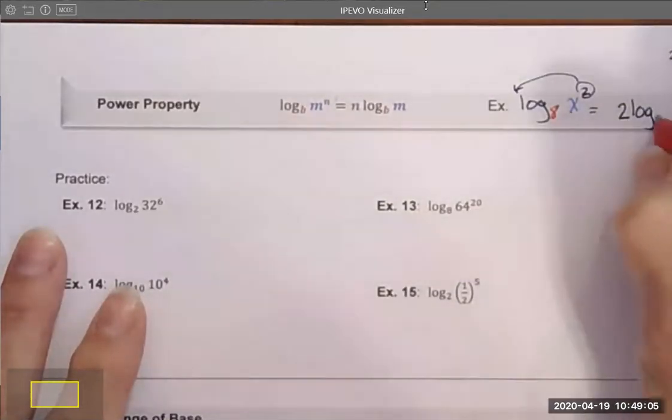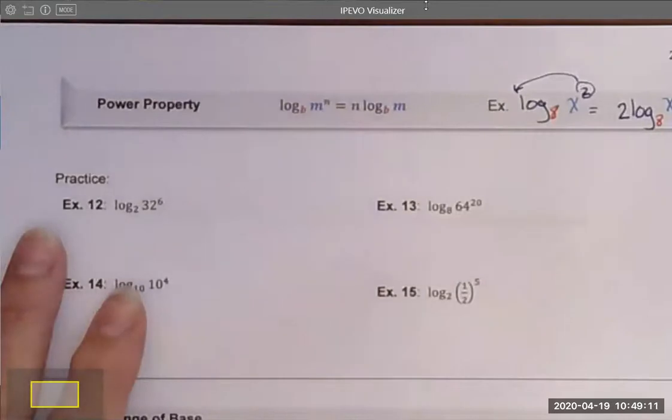And all the rest of the parts, my base is the same and my x remains in the same position. So here we're using the power property just to eliminate that exponent.